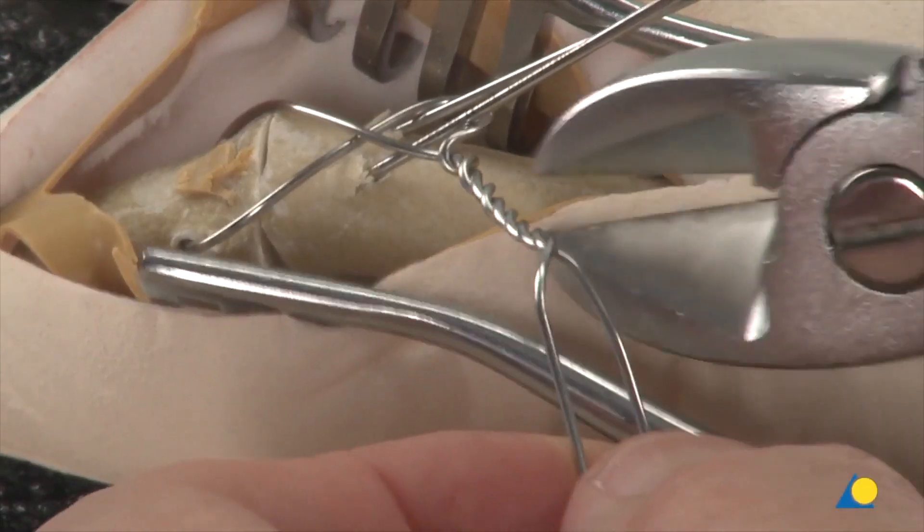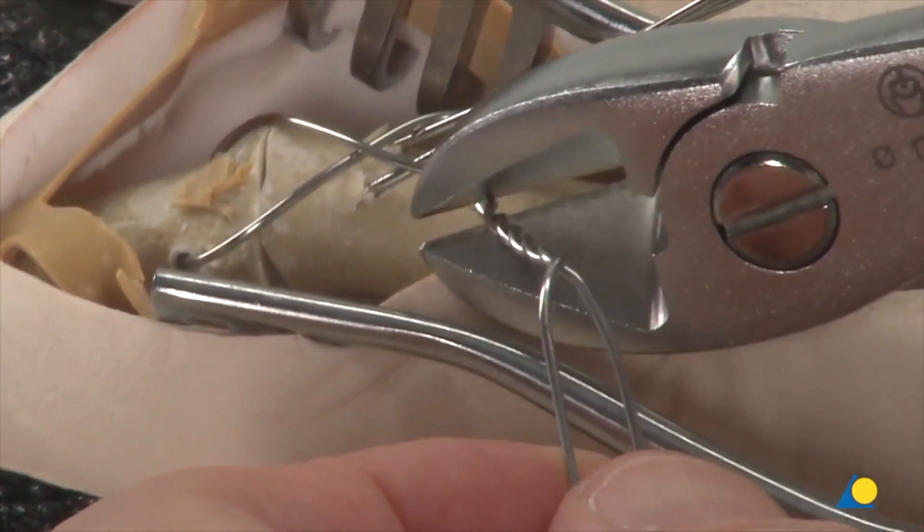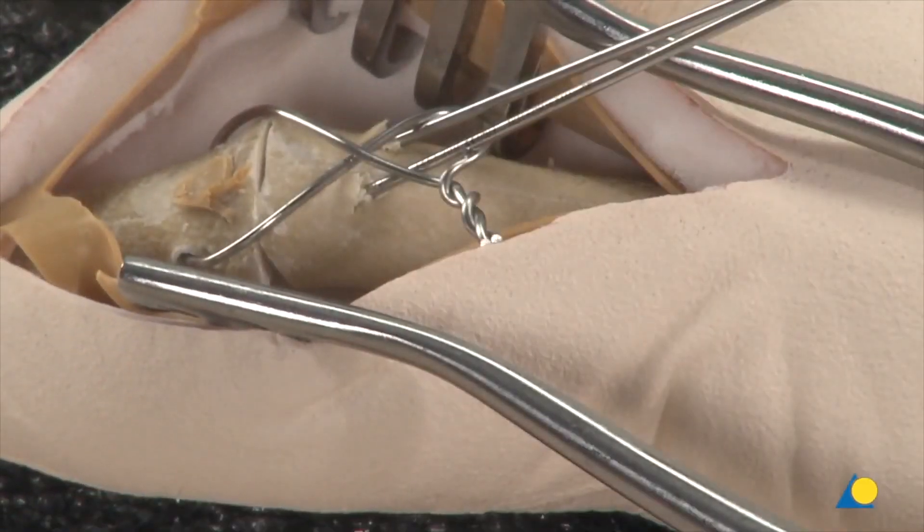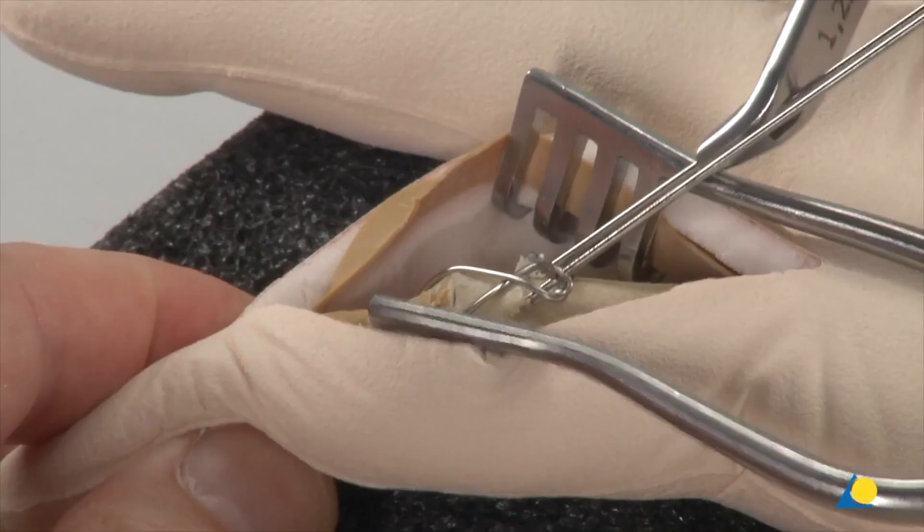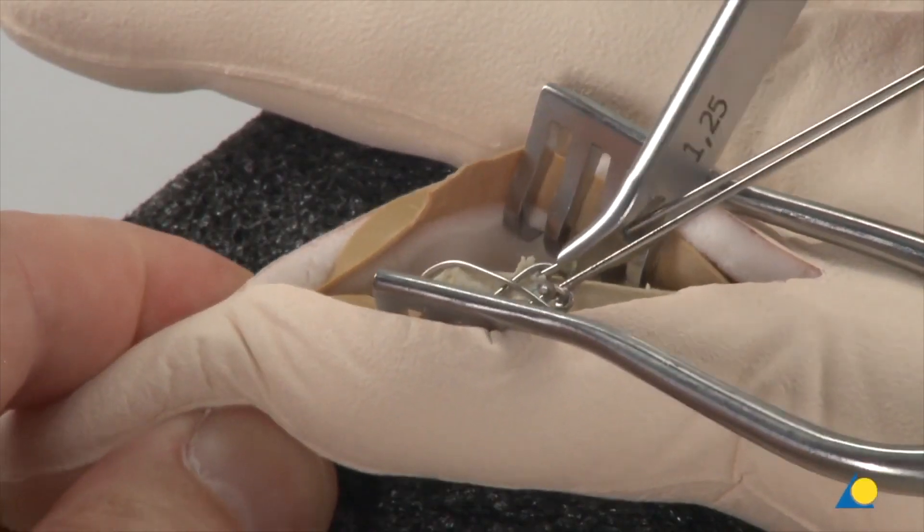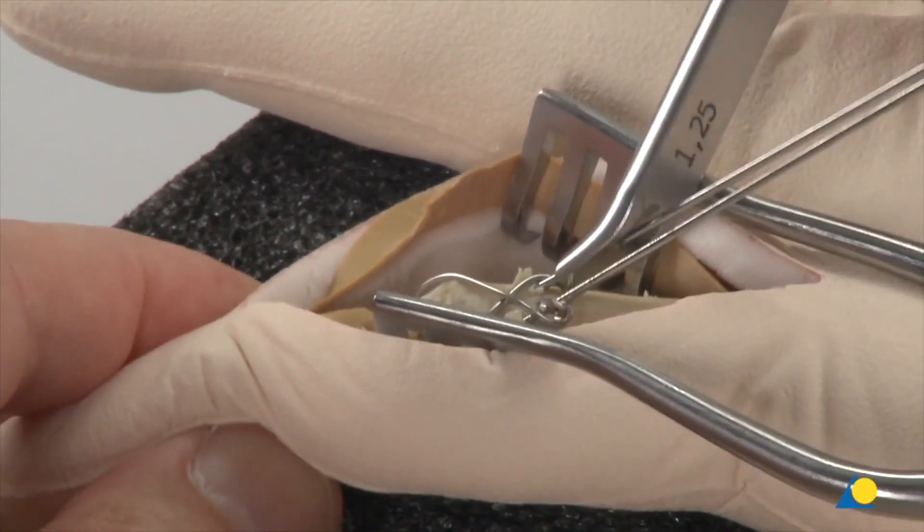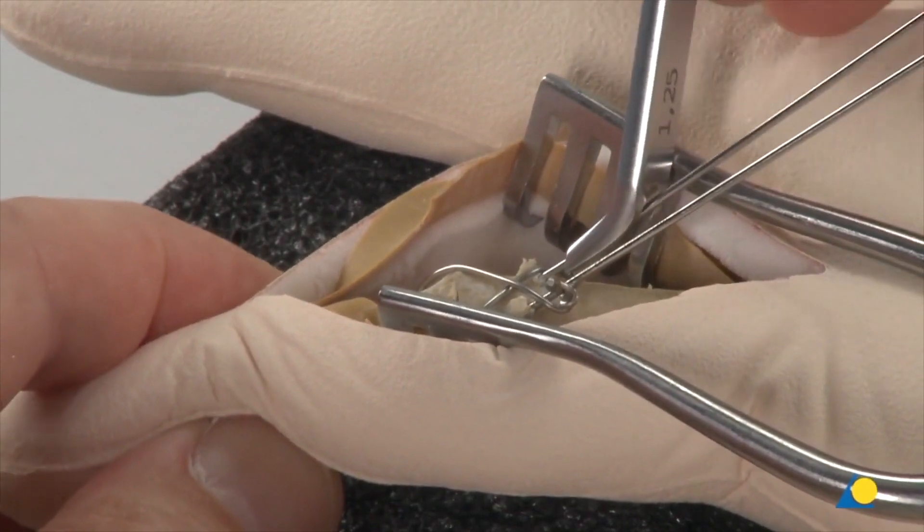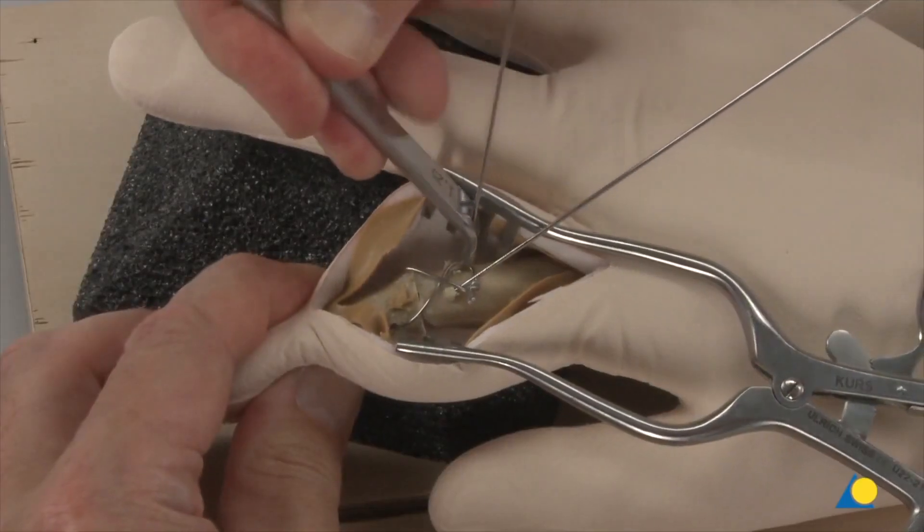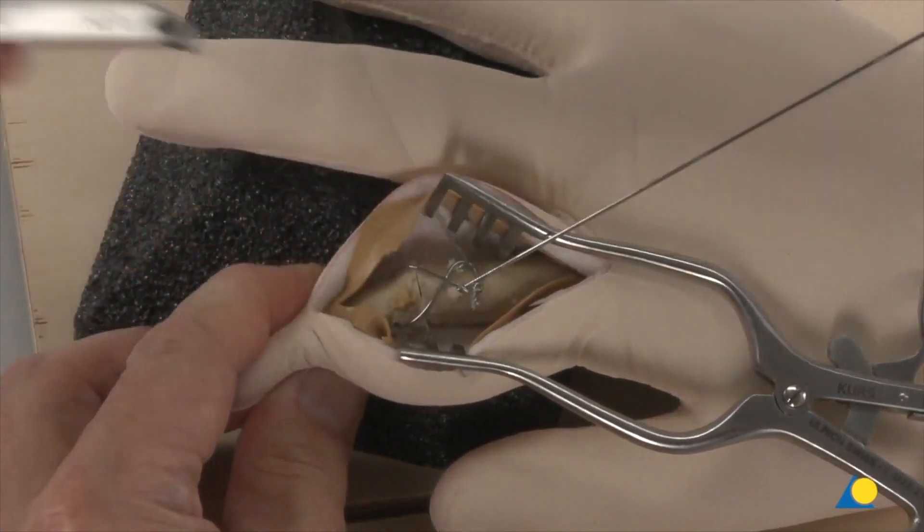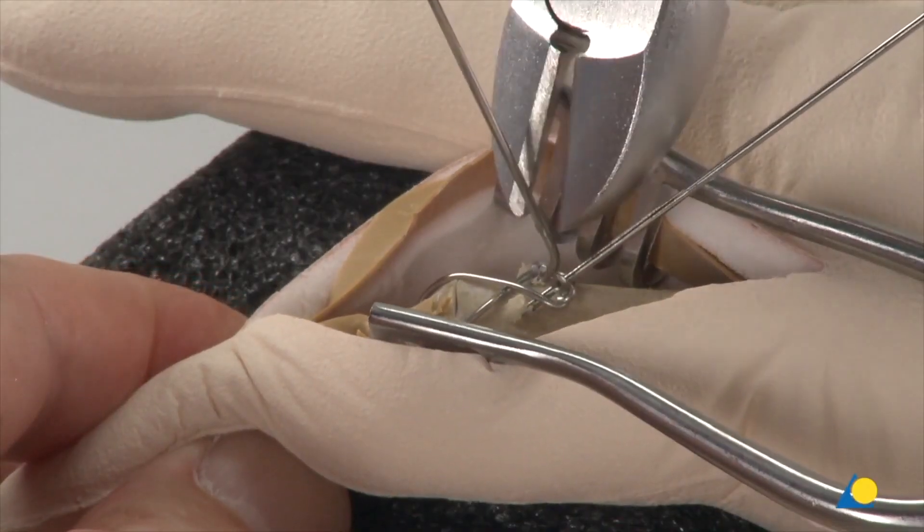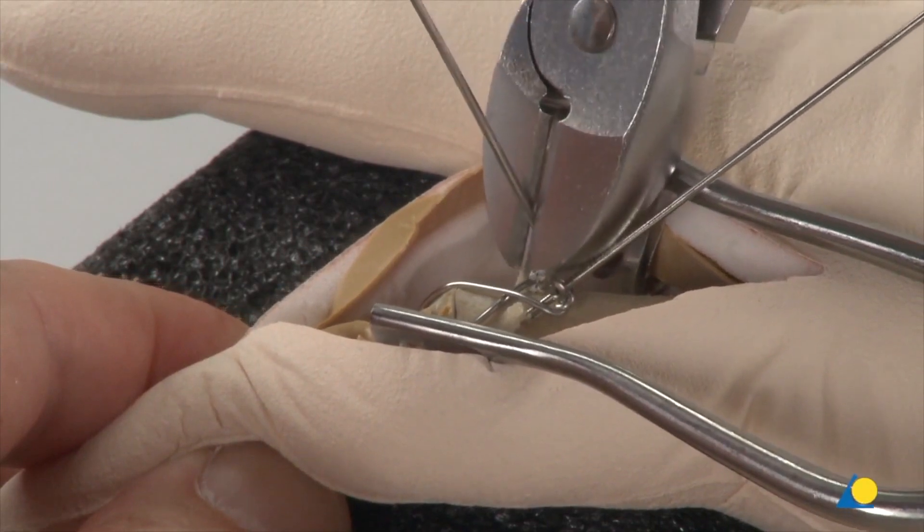The wire ends are then cut with the wire cutter. The K-wires are bent with the bending iron. The wires must be shortened with the wire cutter and bent away to the side.